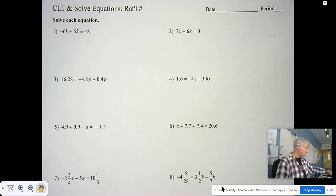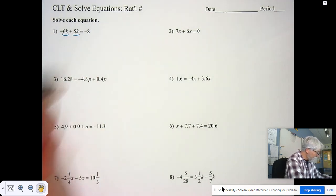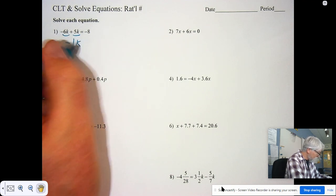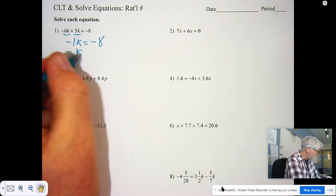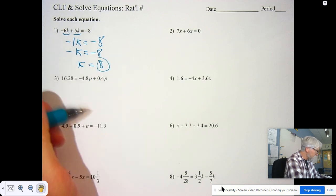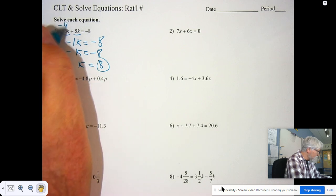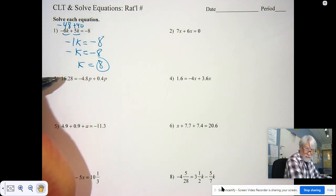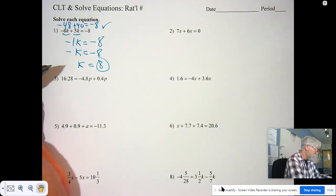Just like we did yesterday, combine the like terms. So in number one, we've got negative six K and a positive five K. That makes negative one K equals negative eight. Or the opposite of K is negative eight, which means that K has to be eight. So let's try that. Negative six times eight is negative 48. Five times eight is 40. Negative 48 and 40 is negative eight. It checks. That's all you got to do.